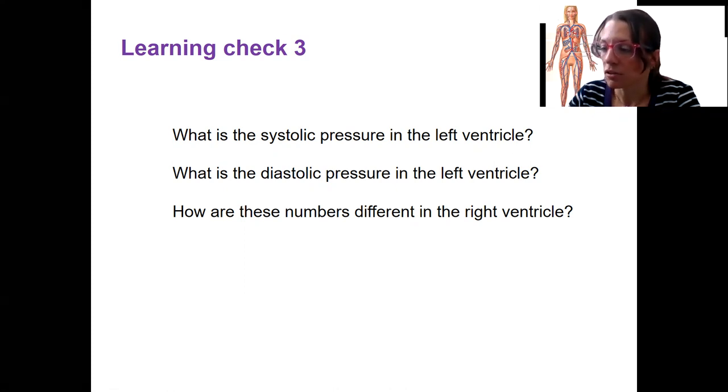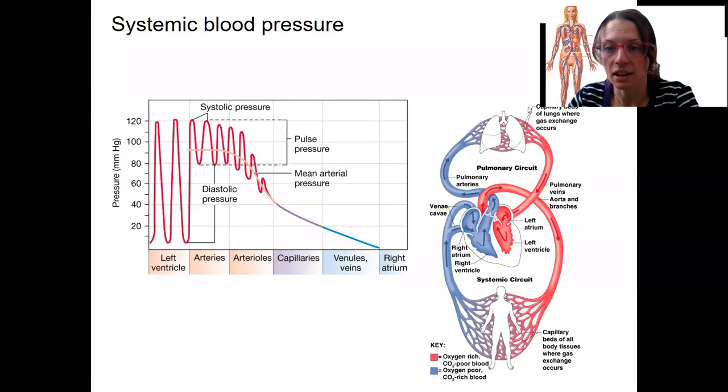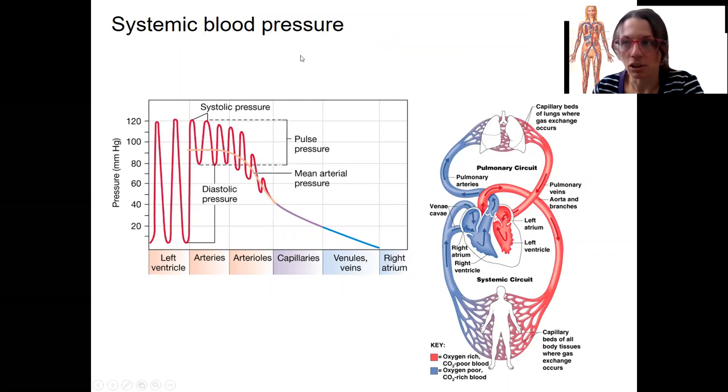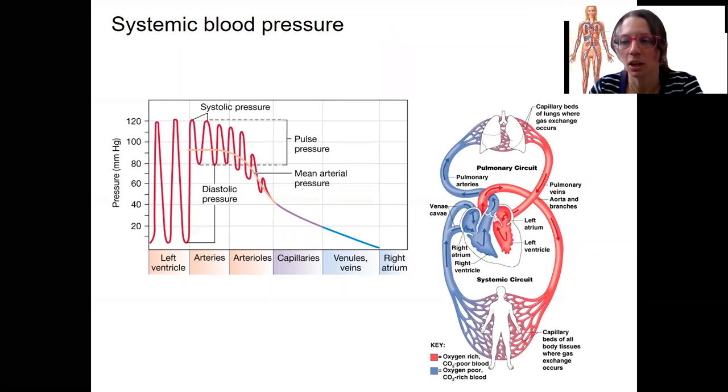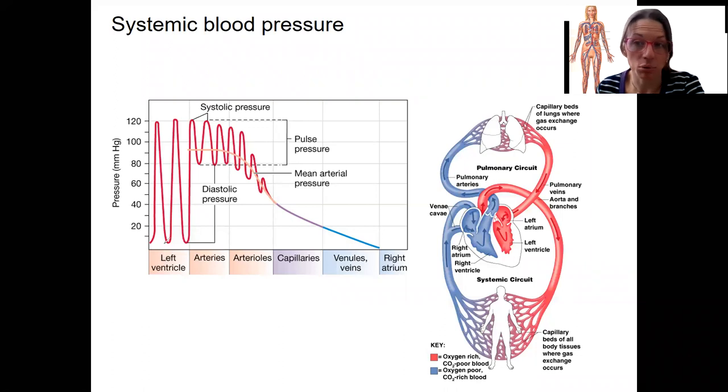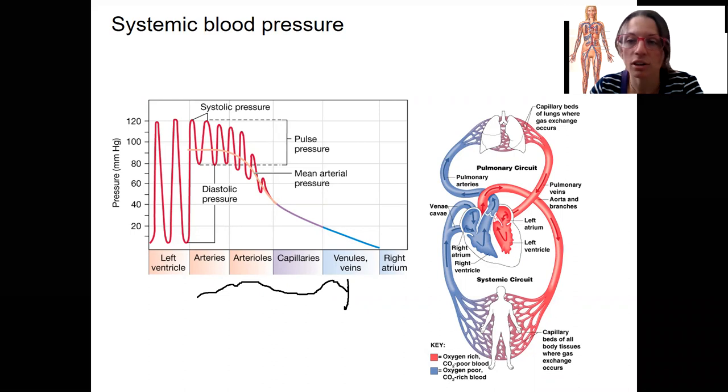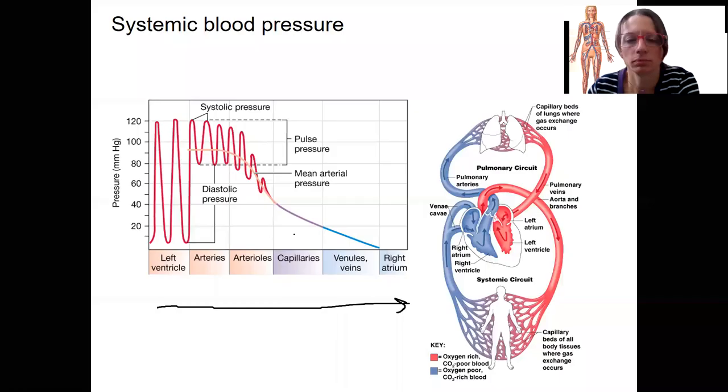For the actual pressures in the ventricle, we talked about this last week with the cardiac cycle, and I think I showed you this image as a preview of what was to come, and now it's here. Here is a graph of pressure over circulation, going from left ventricle out to the systemic circulation and back to the right atrium again. Pressures in the pulmonary circuit aren't going to reach quite as high because we're not having to pump as far away. We don't have to pump throughout the entire body. We're just going to the lungs.